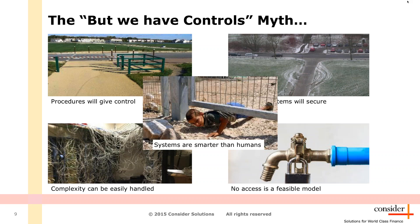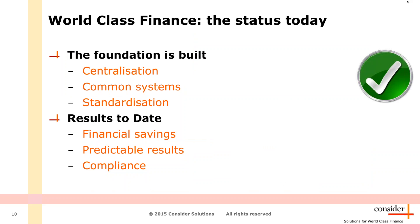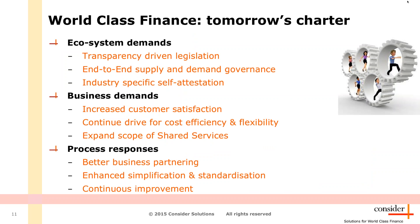And last but not least, we can invent controls as much as we like. Humans are always smarter than systems, and if they need a way, they will find a way to get out of it. Most organizations striving for world-class finance today have a foundation built based on ideas of centralization, common systems, and standardization. Yes, they see financial savings from that and more predictable results and compliance. But tomorrow's demands for world-class finance go much further: elements like transparency, increased customer satisfaction with the customer being part of your supply chain, better business partnering, etc. There is a big demand for a continuous ongoing improvement in the way we look upon process controls, risks, and process optimization.